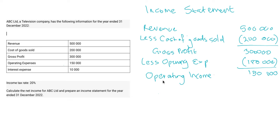So once you get your operating income, this is where you have to now deduct your interest expense. When we deal with the operating expenses, these are the expenses that you incur when you're running your day-to-day business — for example, water and electricity or your rent expenses. These are your selling, general, and administrative expenses that we are deducting in the operating expenses.